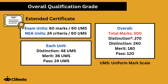There are 300 marks in total in the extended certificate. The two exam units have 60 marks each, where one mark equals one UMS point. The NEA units are out of 24 tasks but are scaled to 60 UMS so all units are equally weighted. Each unit grade is: 48 UMS for distinction, 36 UMS for merit, and 24 UMS for pass. Overall grades range from distinction star at 270 or more out of 300, down to pass at 120–179 out of 300, with anything below 120 being unclassified.